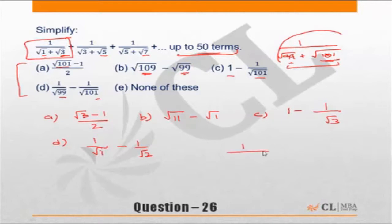Let's check the choices. What is the value of 1 upon under root 1 plus under root 3? Let us just rationalize, which means we will multiply numerator and denominator with under root 1 minus under root 3. So we have 1 upon under root 1 plus under root 3 into root 3 minus root 1 upon root 3 minus root 1.